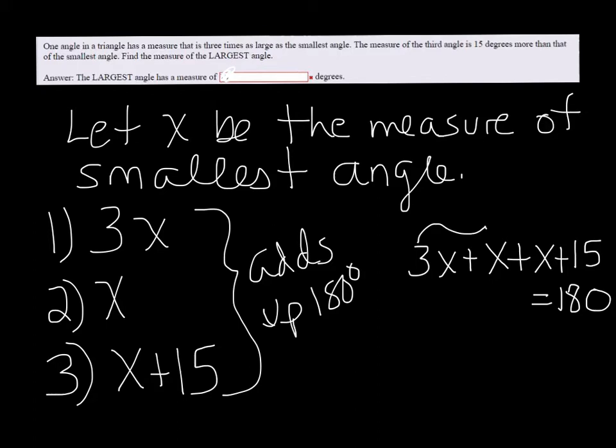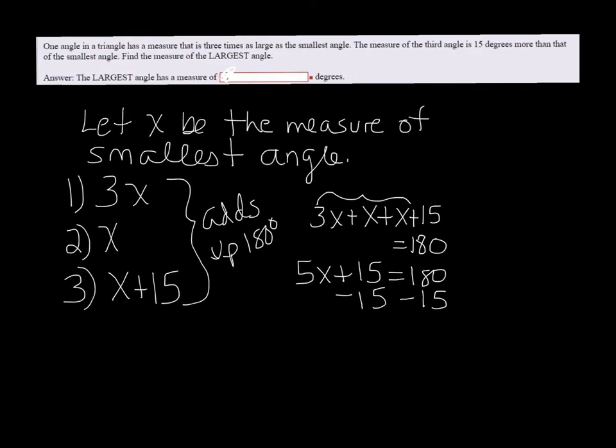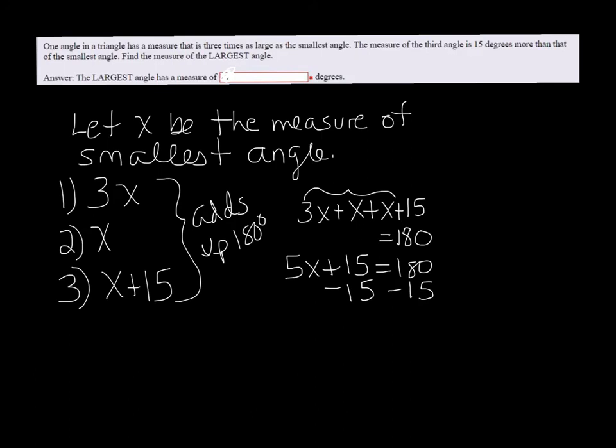If we combine these like terms, that's 5x plus 15 equals 180. Subtract 15 on both sides. And we get 5x equals, let's see, that's 17 minus 1, 165. And then finally divide both sides by 5.